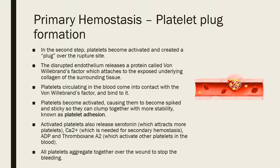Activated platelets release serotonin, which attracts more platelets. They also release calcium 2+ ions, needed for secondary hemostasis. They release ADP (adenosine diphosphate) and thromboxane A2, both of which activate other platelets in the bloodstream. Many platelets become activated, clump together, and aggregate over the open wound in the blood vessel to form the platelet plug, stopping the bleeding.